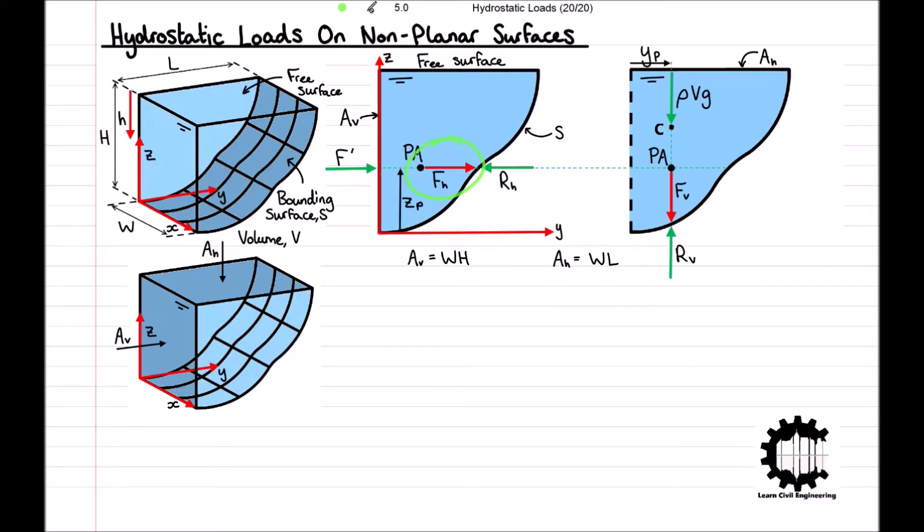The liquid is applying a horizontal load of magnitude FH to the surface, and so the surface must be applying an equal and opposite reaction force to the liquid denoted by RH. It is important to note that FH and RH are the same magnitude and the same horizontal line of action, just acting in opposite directions.